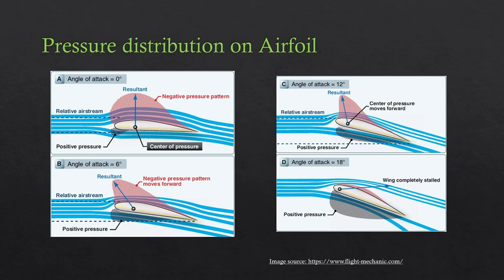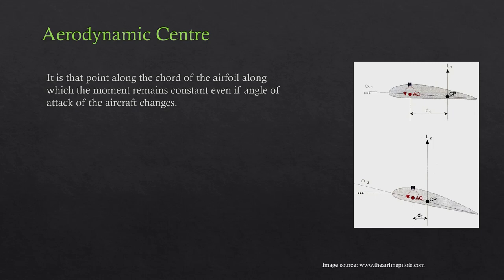If we increase the angle of attack further to say 18 degrees, at which stall will probably start, we have a completely different pressure distribution and the center of pressure has moved quite near to the leading edge of the wing. So we can conclude that as the angle of attack changes, the pressure distribution changes, and due to this change, the center of pressure moves toward the leading edge of the wing. The center of pressure is not a fixed point — it moves toward the leading edge as the angle of attack is increased.